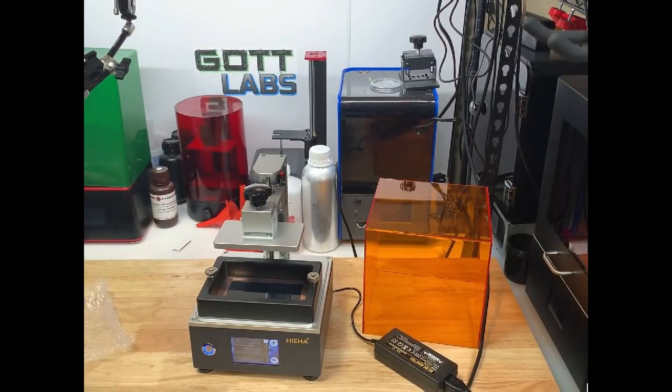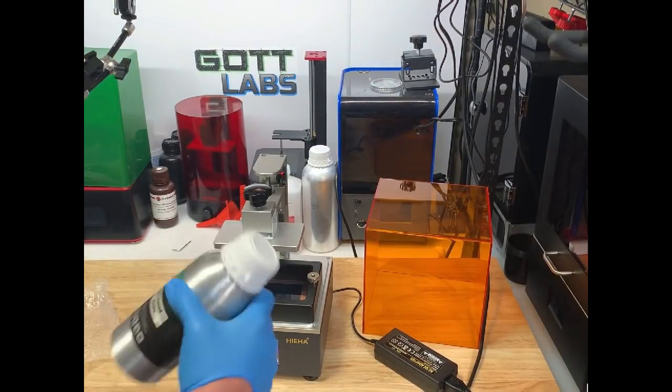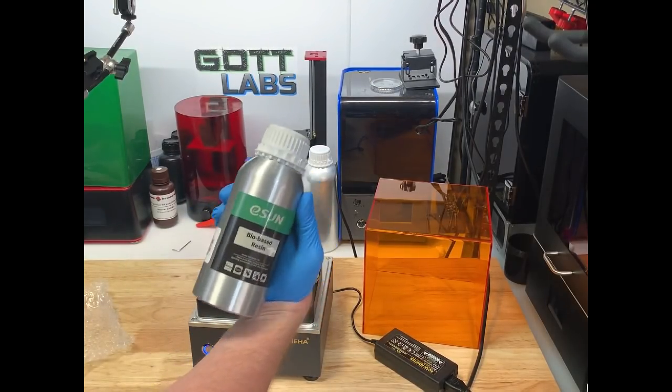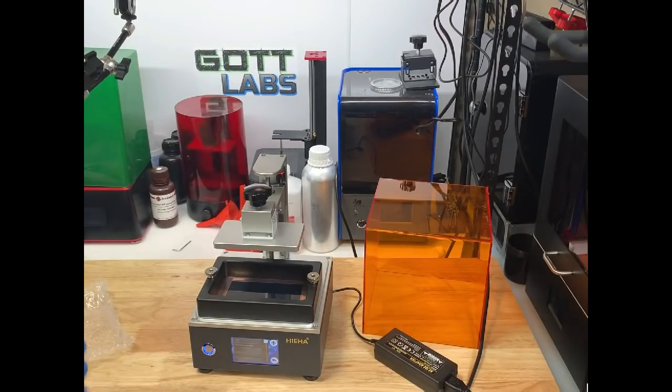I'm going to pour some of this resin in. Again, it didn't come with a resin, so I'm going to use some that I had here in the shop. This is the ESUN bio-based resin. This is the PLA resin they've got. It's what we're going to be using in the second phase of testing on all these machines and I've really liked it.